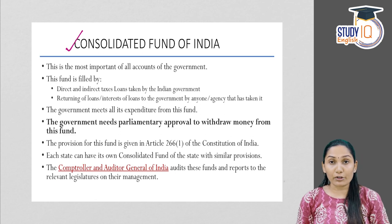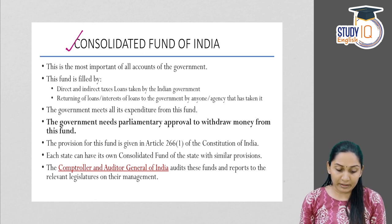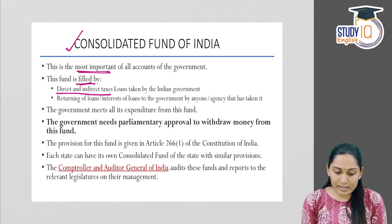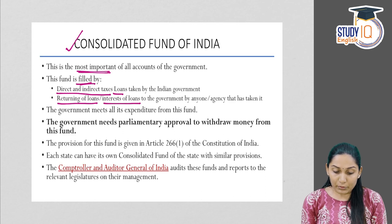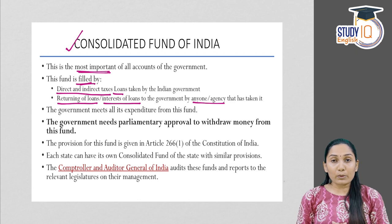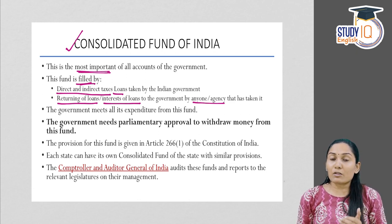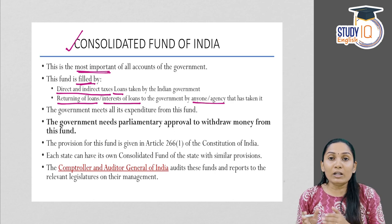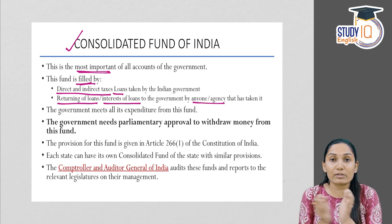The most important fund of all is the Consolidated Fund of India. This fund is filled by direct and indirect taxes, loans taken by the Government of India, repayment of loans, and interest on loans paid back to the government. All the expenses of the government are met from this fund, and all the revenue the government receives goes into this fund — that is why it is the most important fund.